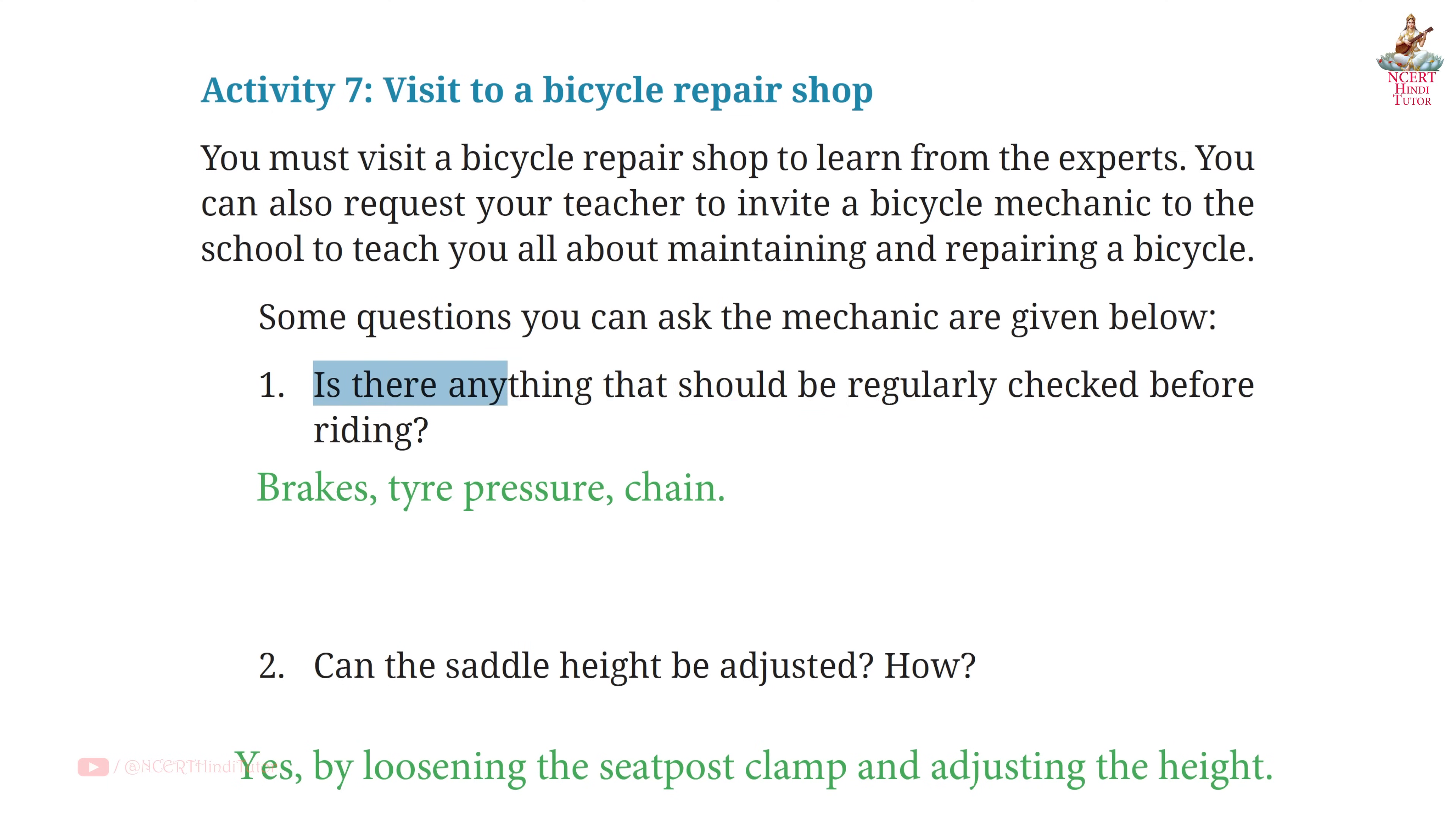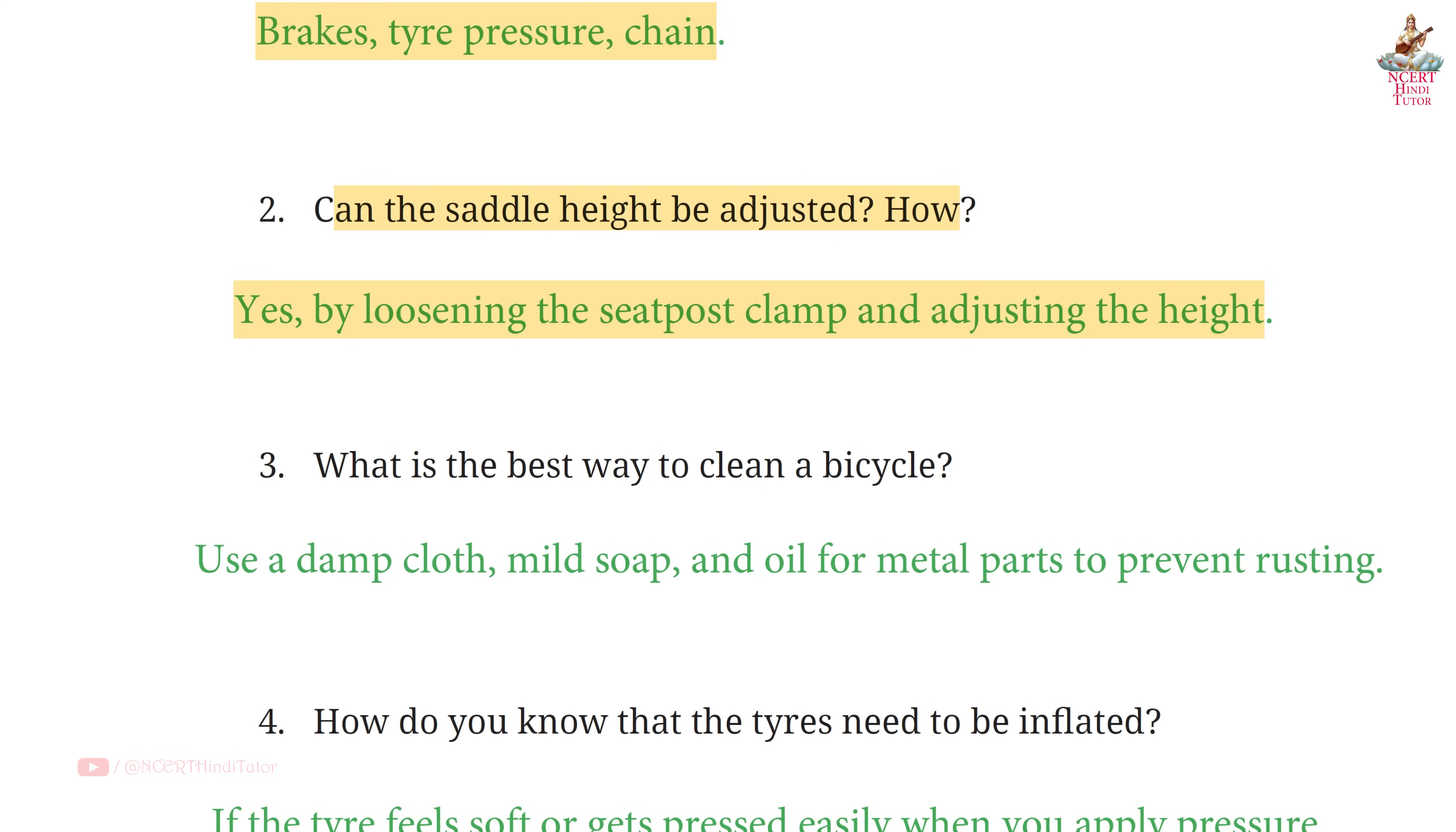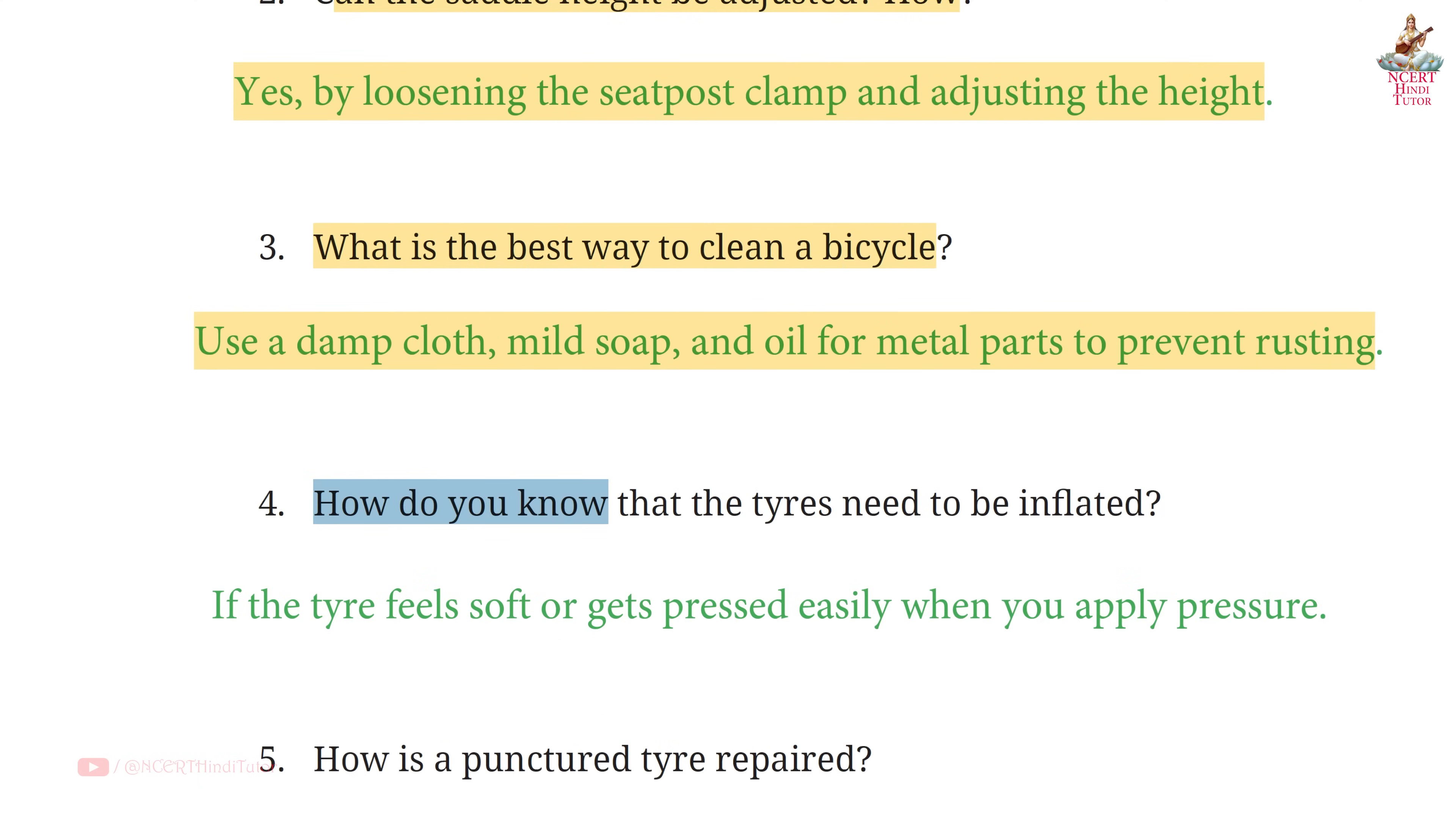Page 76, Question 1: Is there anything that should be regularly checked before riding? Answer: Brakes, tire pressure, chain. Second, Can the saddle height be adjusted? How? Answer: Yes, by loosening the seat post clamp and adjusting the height. Question 3: What is the best way to clean a bicycle? Answer: Use a damp cloth, mild soap, and oil for metal parts to prevent rusting.